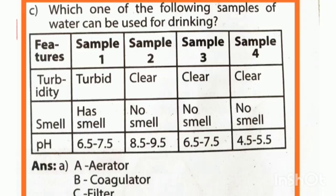Question number C: Which one of the following samples of water can be used for drinking? There are 4 samples. Sample properties include: turbid, clear, clear, and clear.